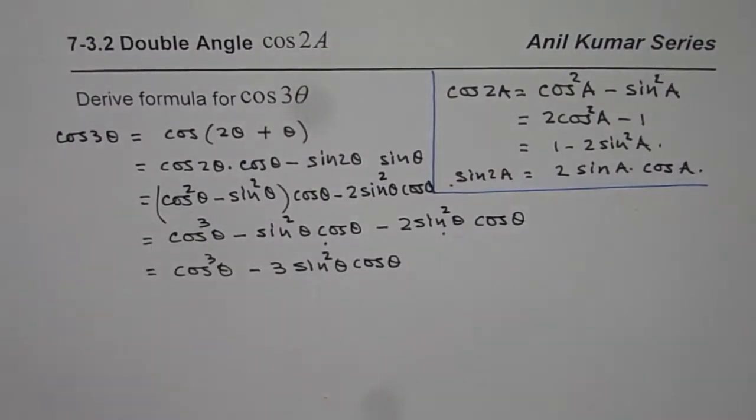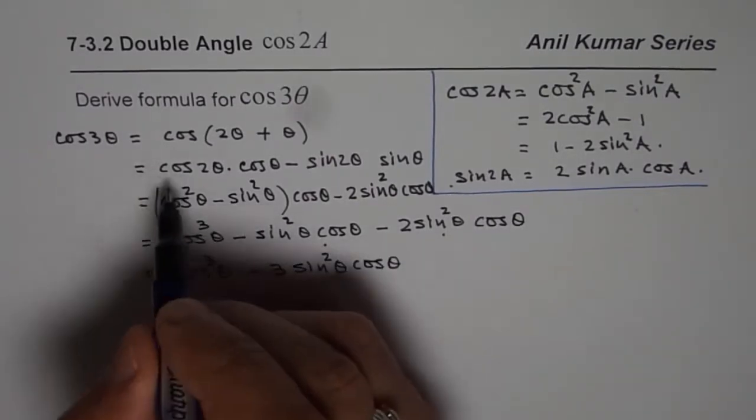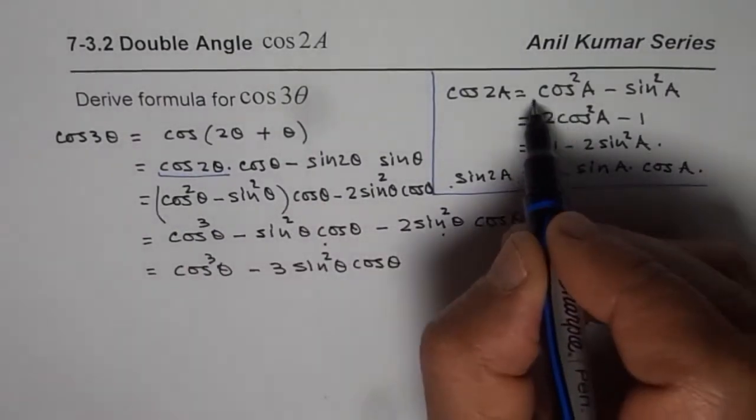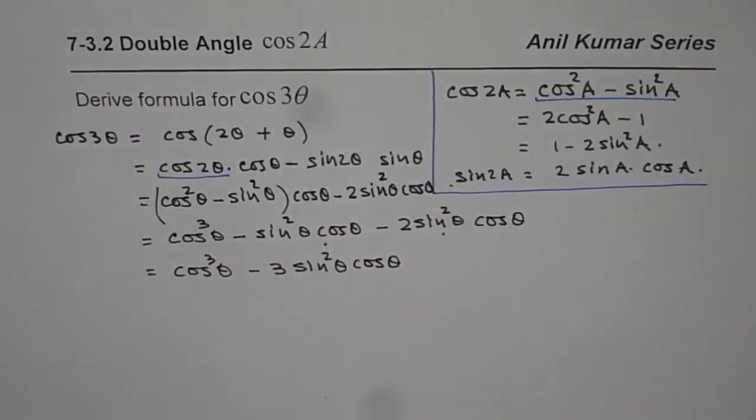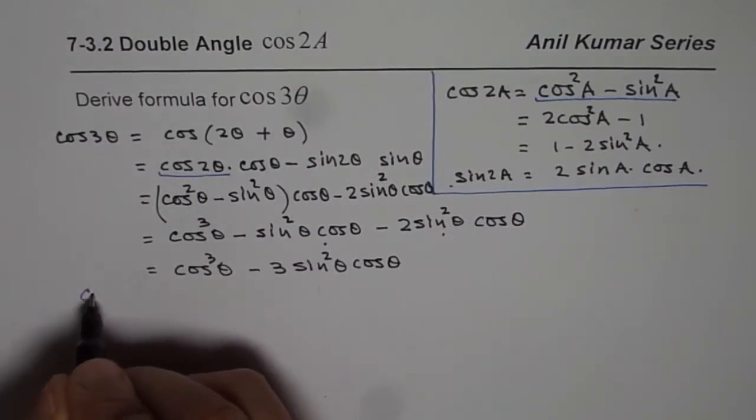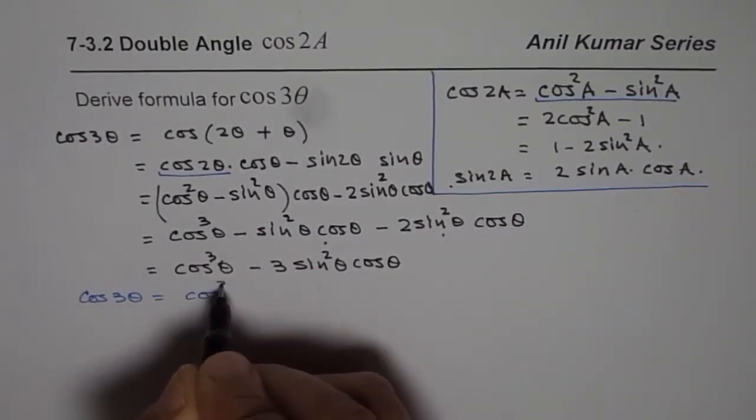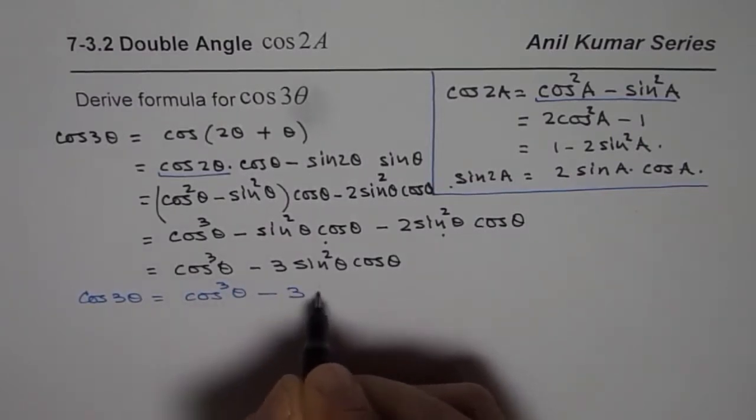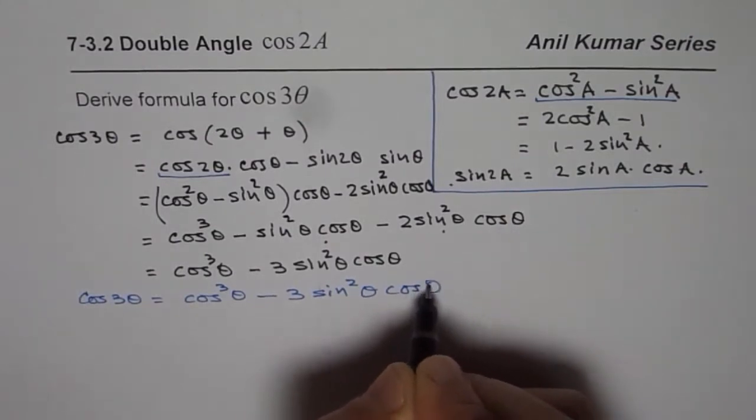So that is how we can get formula for cos of 3 theta. Now my suggestion is that at this stage we applied the first formula, expanded and simplified. And we got a result which is cos of 3 theta equals to cos cube theta minus 3 sine square theta cos theta.